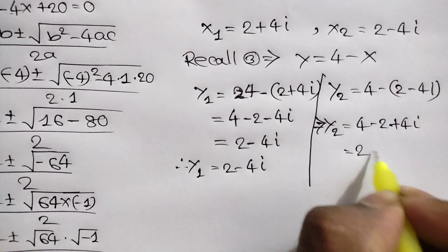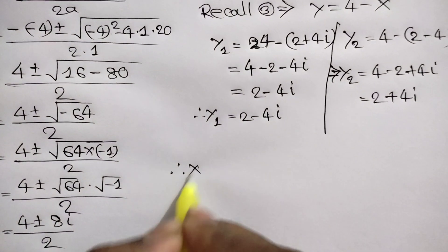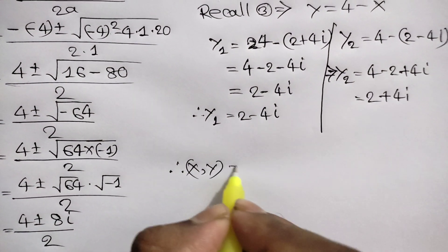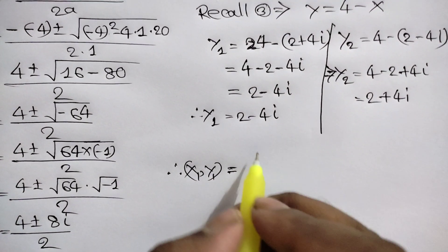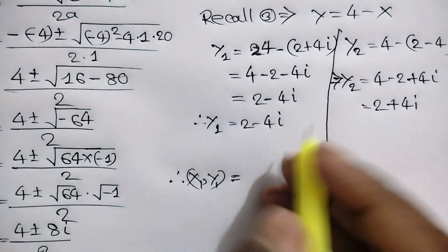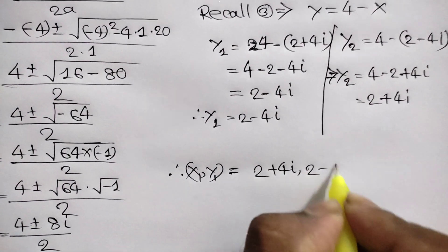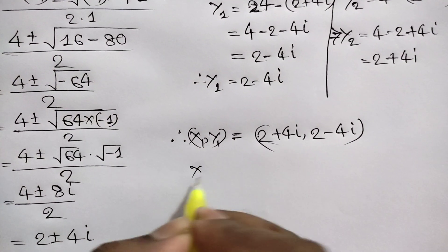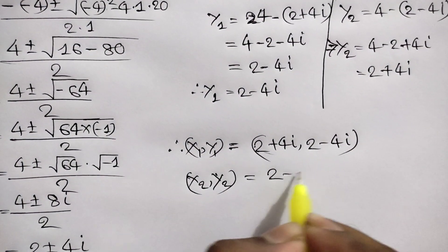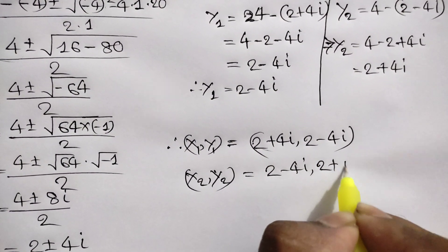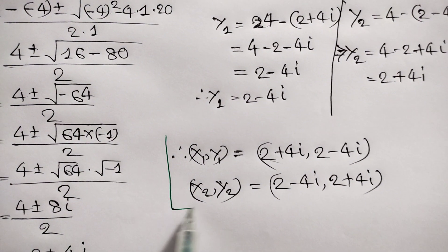So finally, we get: x1, y1 is equal to (2 plus 4i, 2 minus 4i), and x2, y2 is equal to (2 minus 4i, 2 plus 4i). This is our final answer.